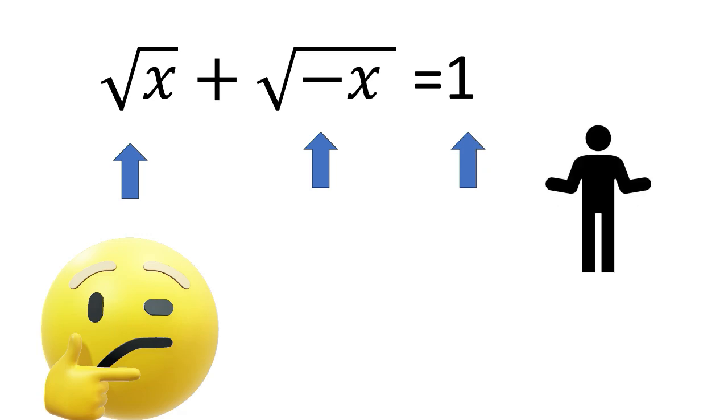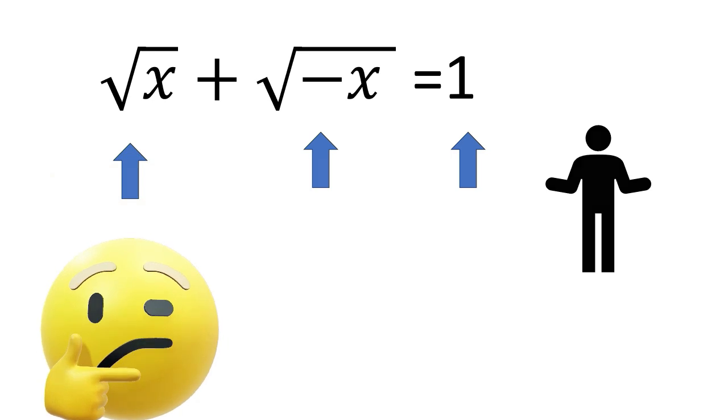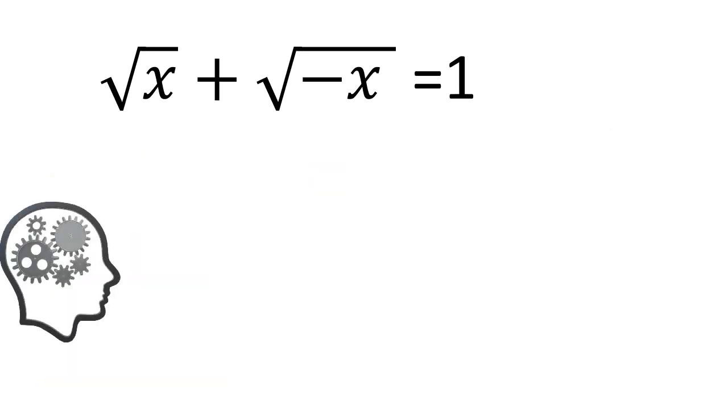We need to solve the equation: square root of x plus square root of negative x equals 1. Looks a little tricky, doesn't it? But don't worry, we'll break it down step by step. Let's get started.